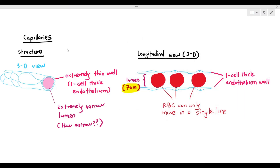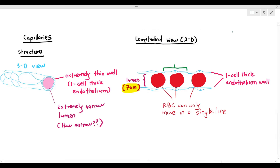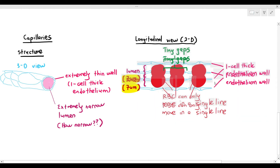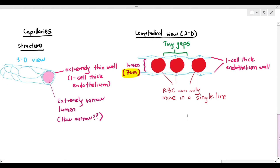Another thing we have to know is the walls of the capillaries are not directly attached to each other — they will have tiny gaps between the capillary endothelium wall. The reason for the tiny gaps will be important when we talk about tissue fluid in another video. For now, the lumen is 7 micrometers, red blood cells can only move one at a time in a single line, and the capillary walls have very tiny minuscule gaps.